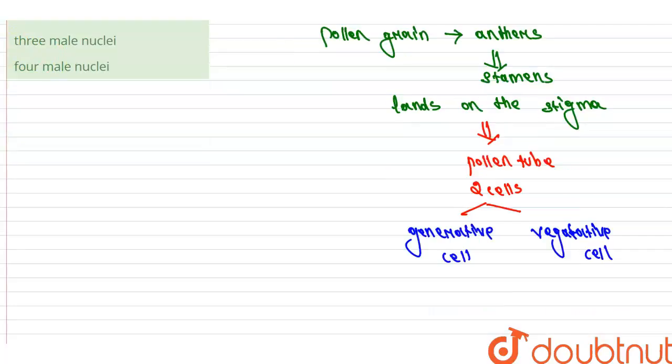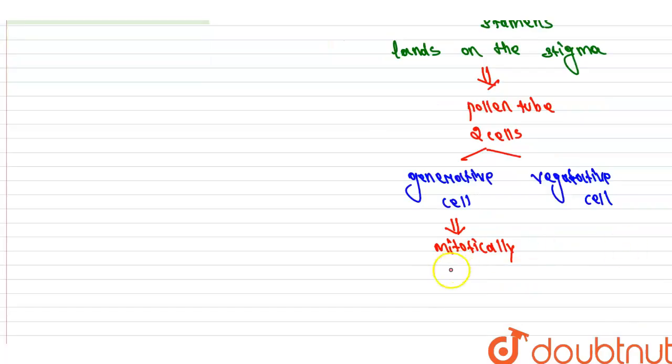This generative cell we are talking about divides mitotically to form two male gametes, which move with the pollen tube towards the micropilar end.